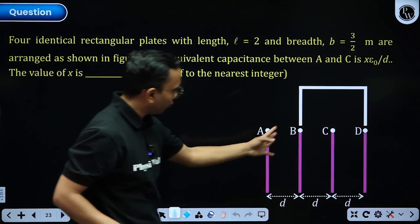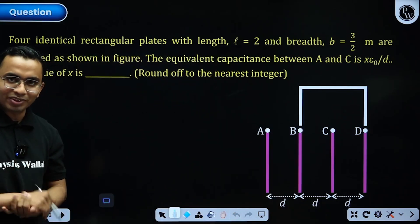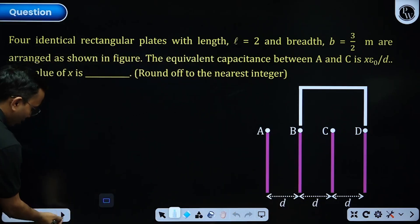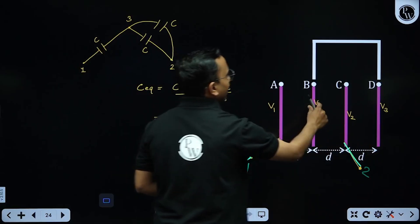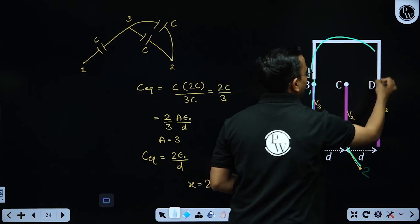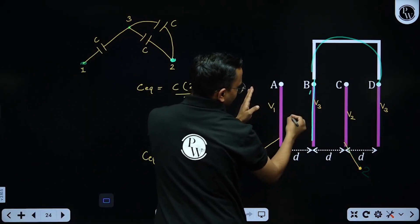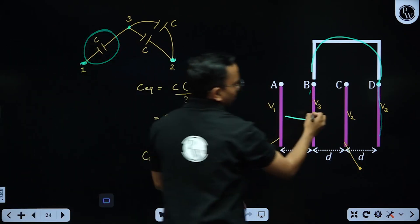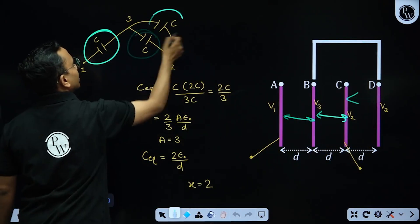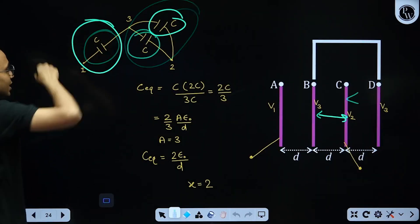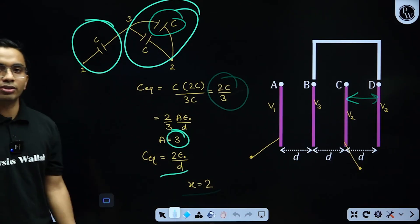Next question: four plates are arranged with given separations, and we need the equivalent capacitance between A and C. Assign potentials V1, V2, V3 to the plates. One capacitor is between terminals 1 and 3; two capacitors are between terminals 2 and 3 (in parallel, giving 2C). That 2C is in series with C, yielding C_eq = 2C/3. With C = Aε₀/D and area = 3, I get X = 2 as the answer.